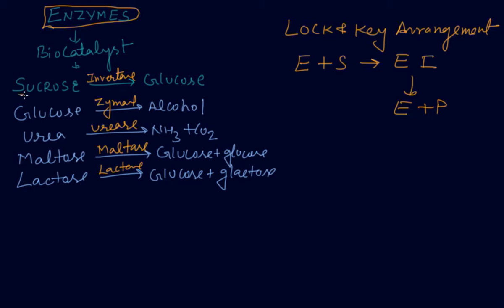We discussed these enzymes in the alcohol chapter also. Sucrose is converted into glucose with the help of invertase enzyme. Glucose is converted into ethanol in plants with zymase. Urea is converted into ammonia and CO2 with the help of urease. Maltose is converted into glucose with maltase, and lactose is also converted into glucose with lactase.